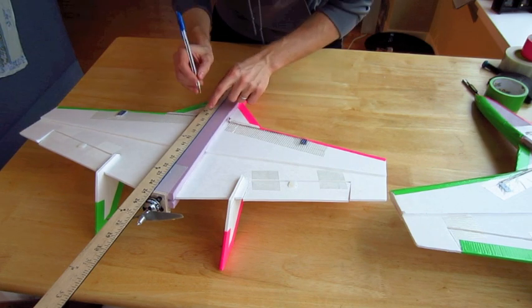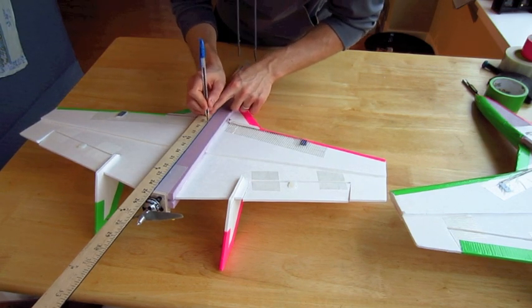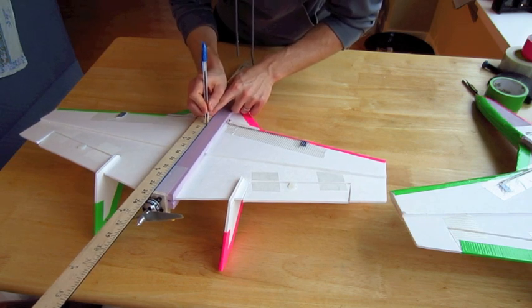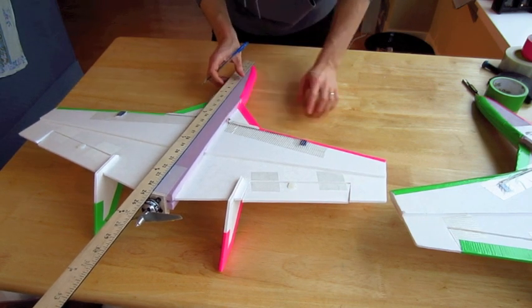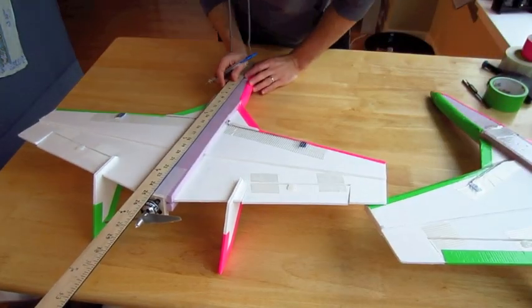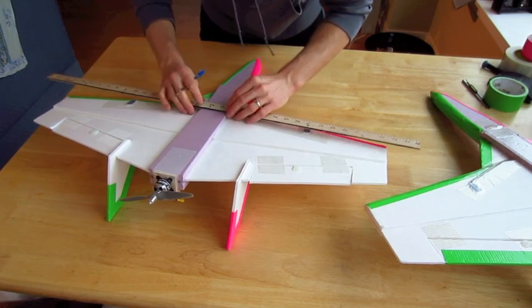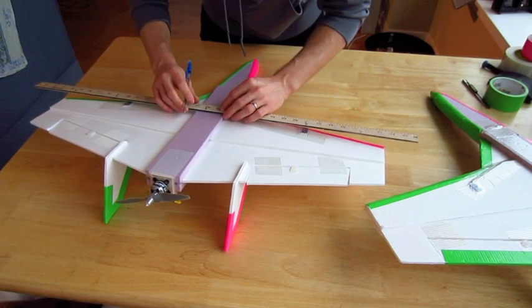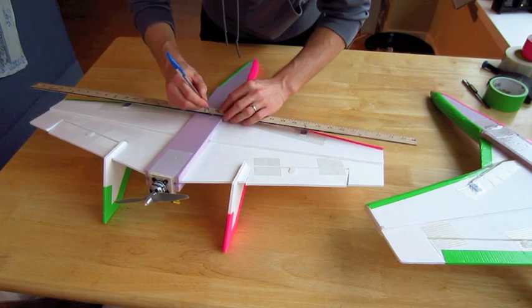And it's back, it sits between 15 and a quarter and 15 and a half inches back from the nose. So I mark that out here. And then I just draw lines across. And that's where the center of gravity needs to be for this plane.